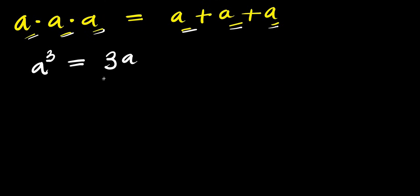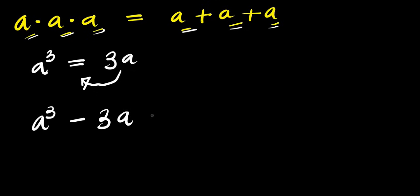The next thing we are going to do is move 3a to the other side, so we are going to have a to the power of 3 minus 3a equals 0. Remember, this is positive, but when it crosses the equality sign it becomes negative, so we have negative 3a.